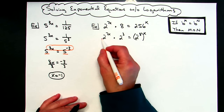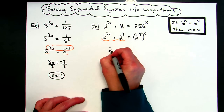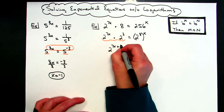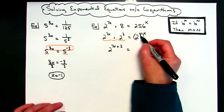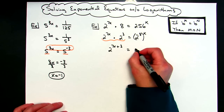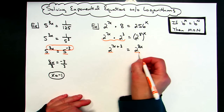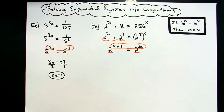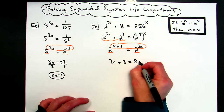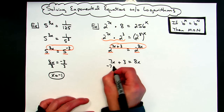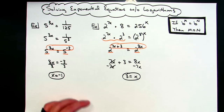Now applying laws of exponents: when multiplying like bases, I add the exponents, so I rewrite the left side as 2 raised to the 7x plus 3. On the right side, power raised to a power means I multiply 8 and x, giving 2 to the 8x. I've got like bases of 2, so I can set the exponents equal: 7x plus 3 equals 8x. Subtracting 7x from both sides gives me 3 equals x.